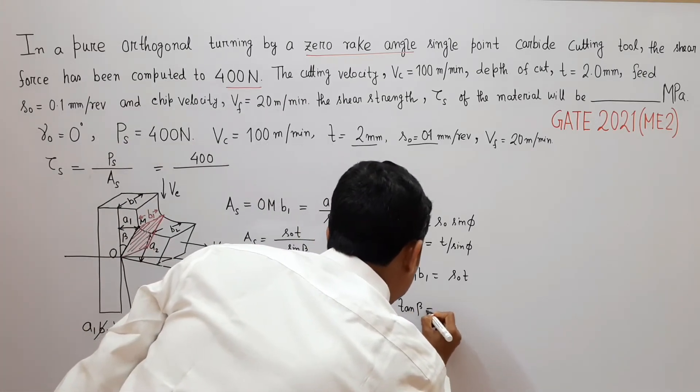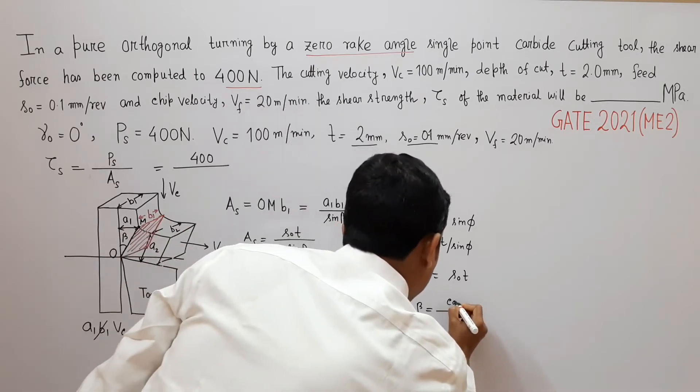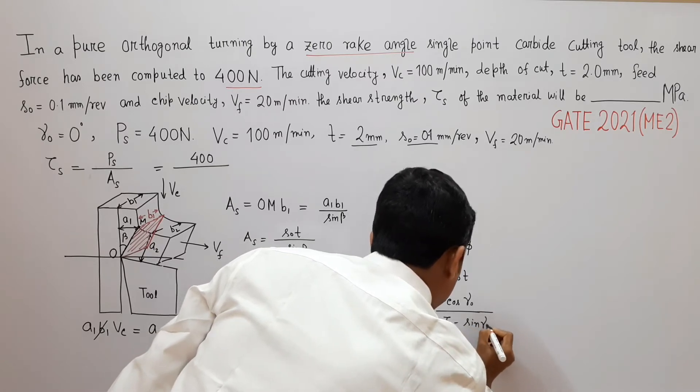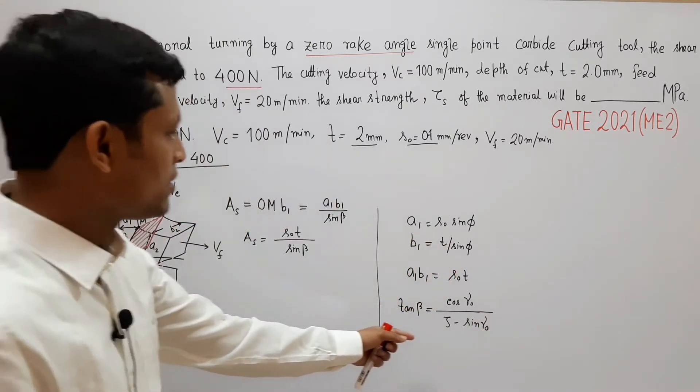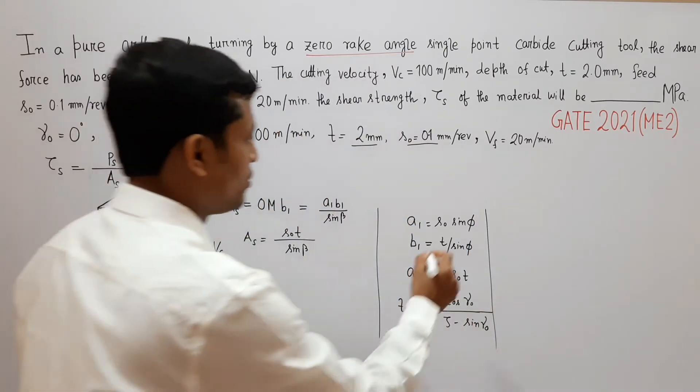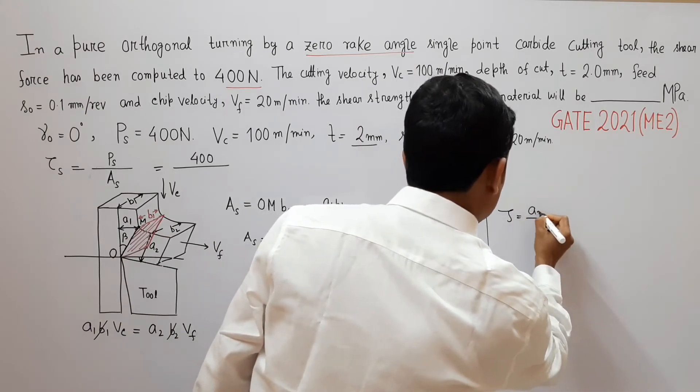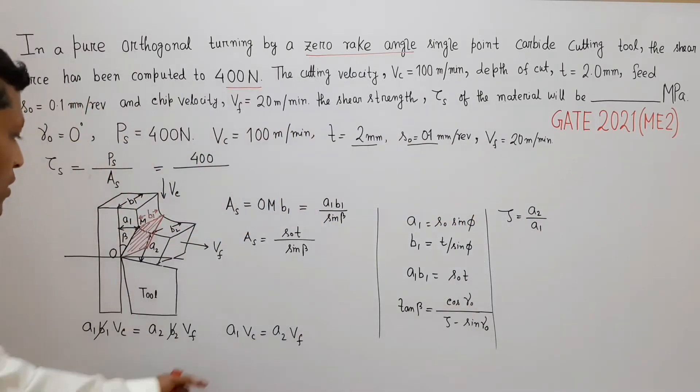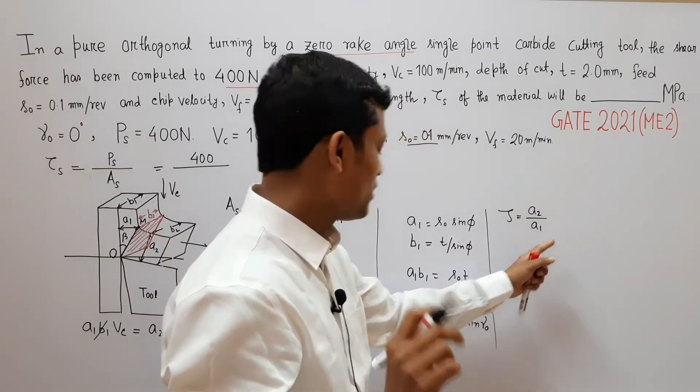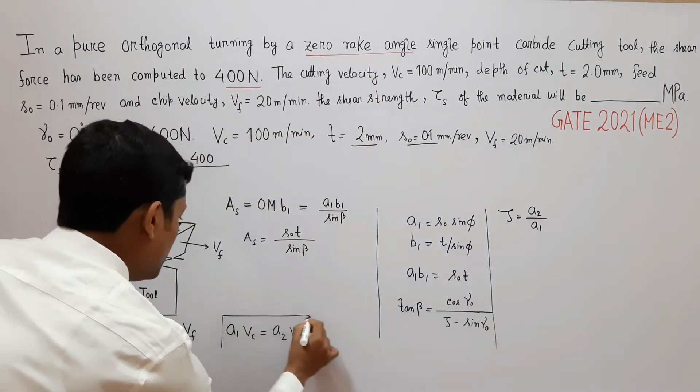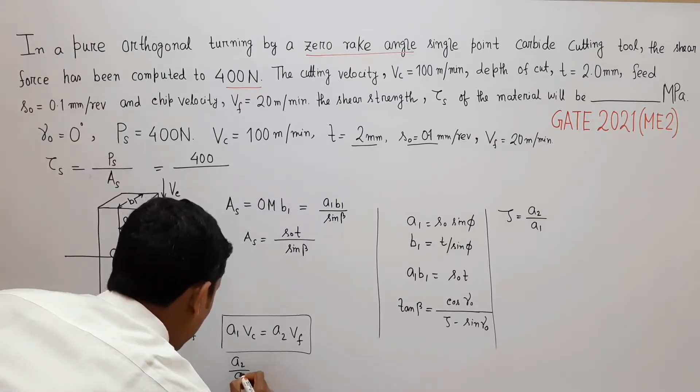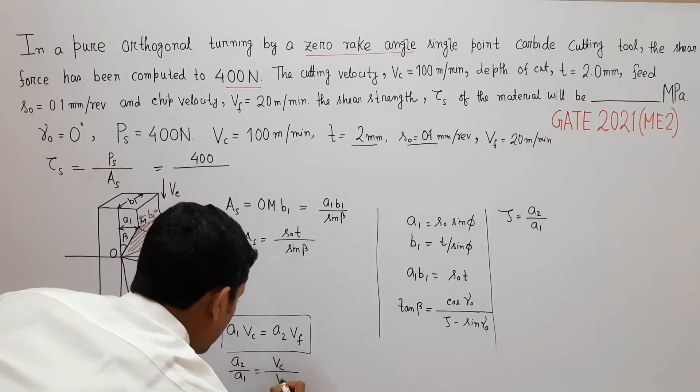That is tan of beta. We know cos gamma_o divided by zeta minus sine gamma_o. What is zeta? Zeta is chip reduction coefficient. So zeta is A2 by A1. From this relationship that we have derived earlier, A2 by A1 is Vc by Vf.